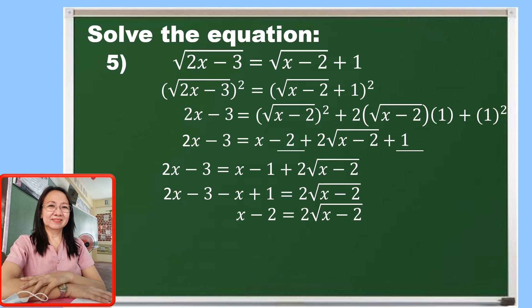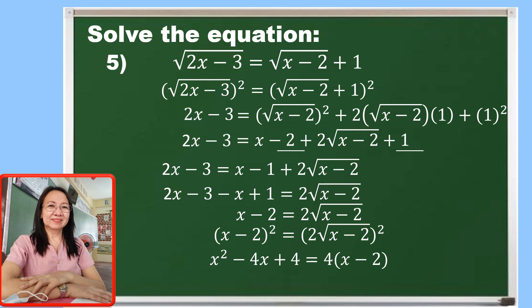Now, since we have a radical again at this point, we are going to square both sides. The left side is x minus 2, and squaring gives x squared minus 4x plus 4. The right side is 2 times the square root of x minus 2 squared, which is 4 times the quantity x minus 2. Applying the distributive property, 4 times x is 4x and 4 times negative 2 is negative 8.